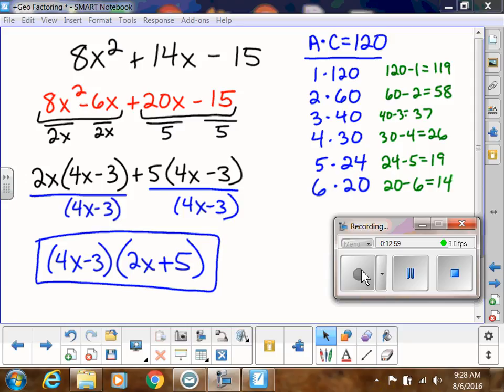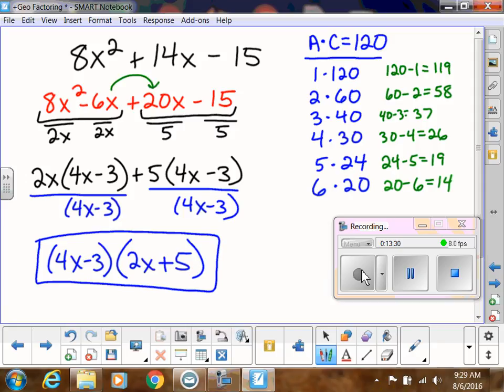Try this one on your own. So you should have gotten this, I boxed it here: 4x minus 3 and 2x plus 5. The order doesn't matter. I will say though, if you were going through this, hopefully as soon as you get to 6 and 20 and you see that that works for 14, I would stop. I wouldn't just list all the factors of 120 just for the heck of it. So you might have flip-flopped these. You might have put the 20x first and then the negative 6x. That's okay. Your work might look different, but we should get the same answer. If you put the negative 6x second, make sure you factor out that negative 3. Hopefully you did that. If you had trouble, that's a good question to ask me in class. So that is factor by grouping. Thank you.